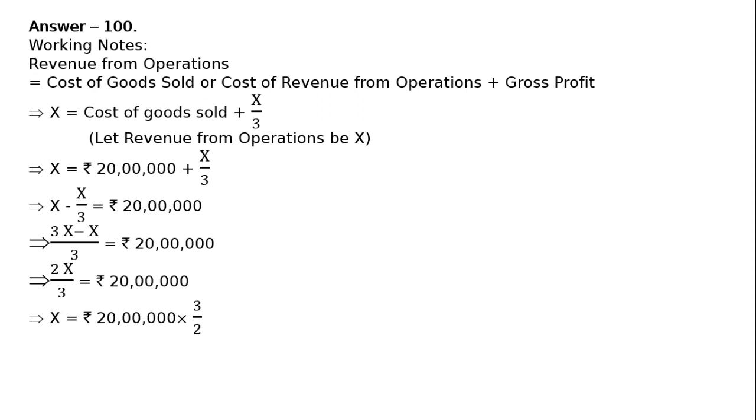This implies x = Rs 20 lakhs × 3/2, so revenue from operations = Rs 30 lakhs. From the working notes: revenue from operations = Rs 30 lakhs, hence gross profit = Rs 10 lakhs, and cost of revenue from operations (as given) = Rs 20 lakhs.